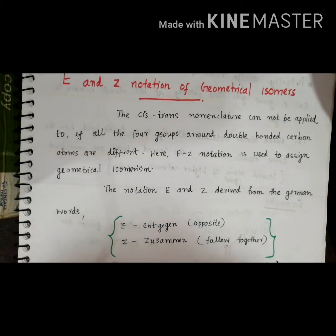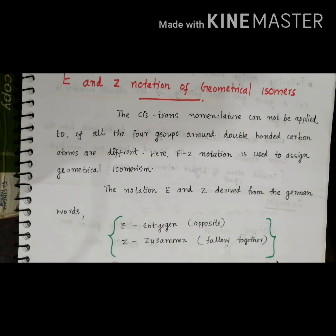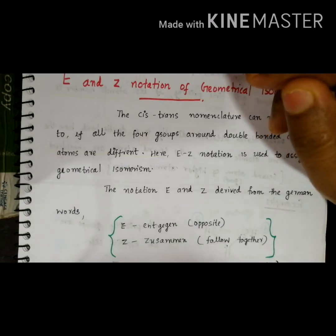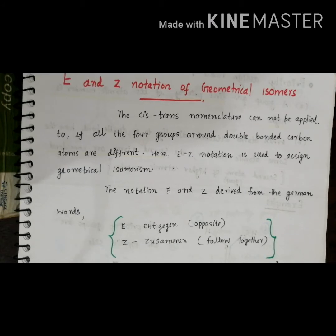Welcome to this video class. Today we are going to discuss E and Z notation of geometrical isomers. Before that, we have to discuss the importance of E and Z notation in stereochemistry. Usually for carbon-carbon double bond cases, we have followed cis-trans isomers, but here we are introducing one more configuration method — that is E and Z notation.